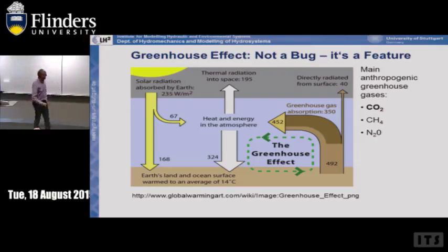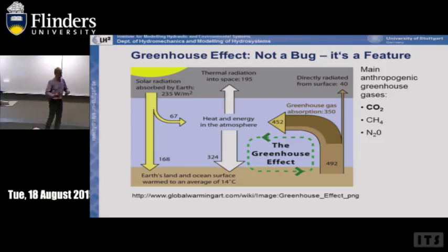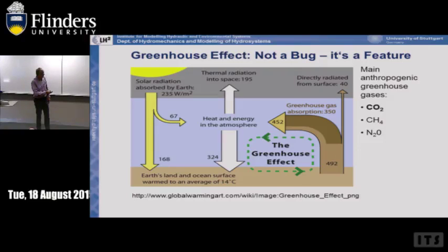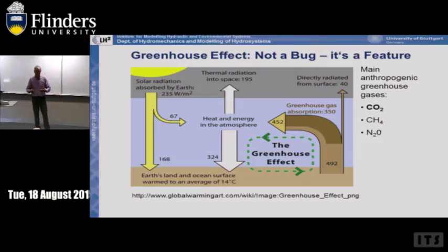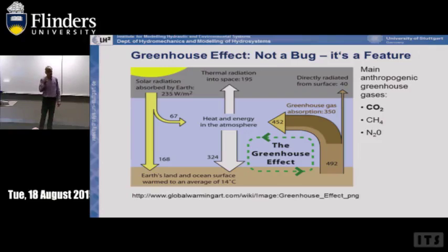The greenhouse effect — I hope you agree — is not a bug, it's really a feature. The greenhouse effect depends on three main gases: CO2, methane CH4, and NO2. We recalculate all these numbers into CO2-equivalent numbers. For instance, one gram of methane is 20 to 25 times more impactful than one gram of CO2. That means methane is much more aggressive compared to CO2 in terms of climate change.